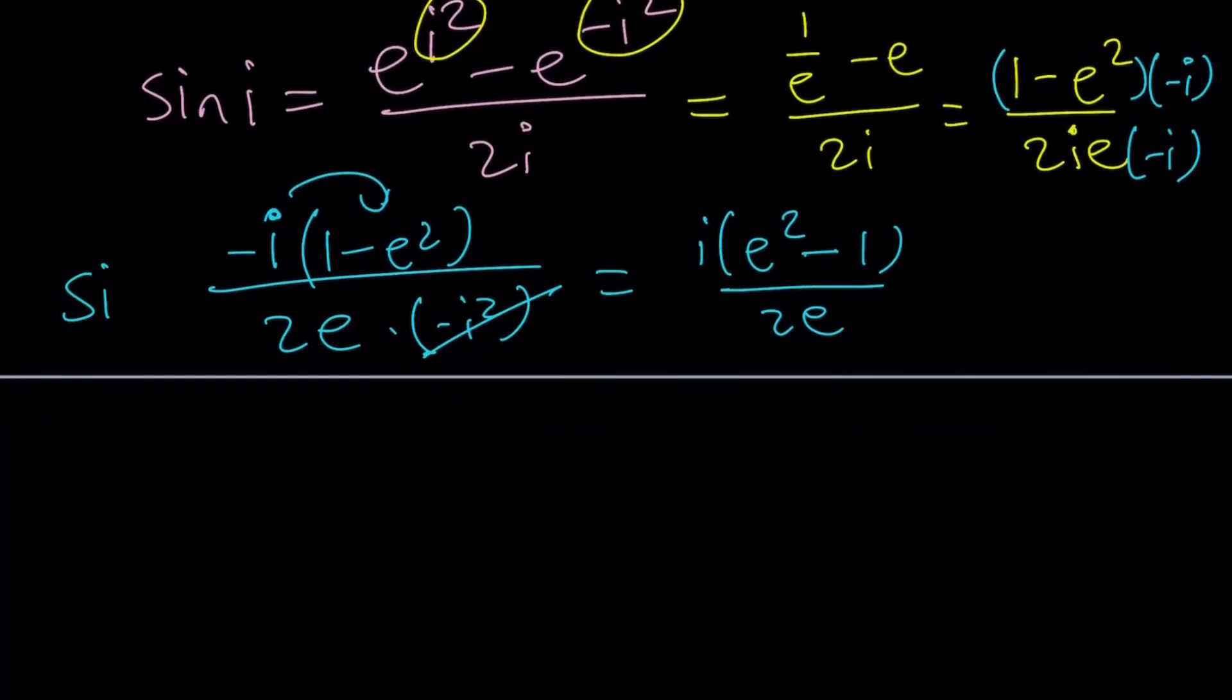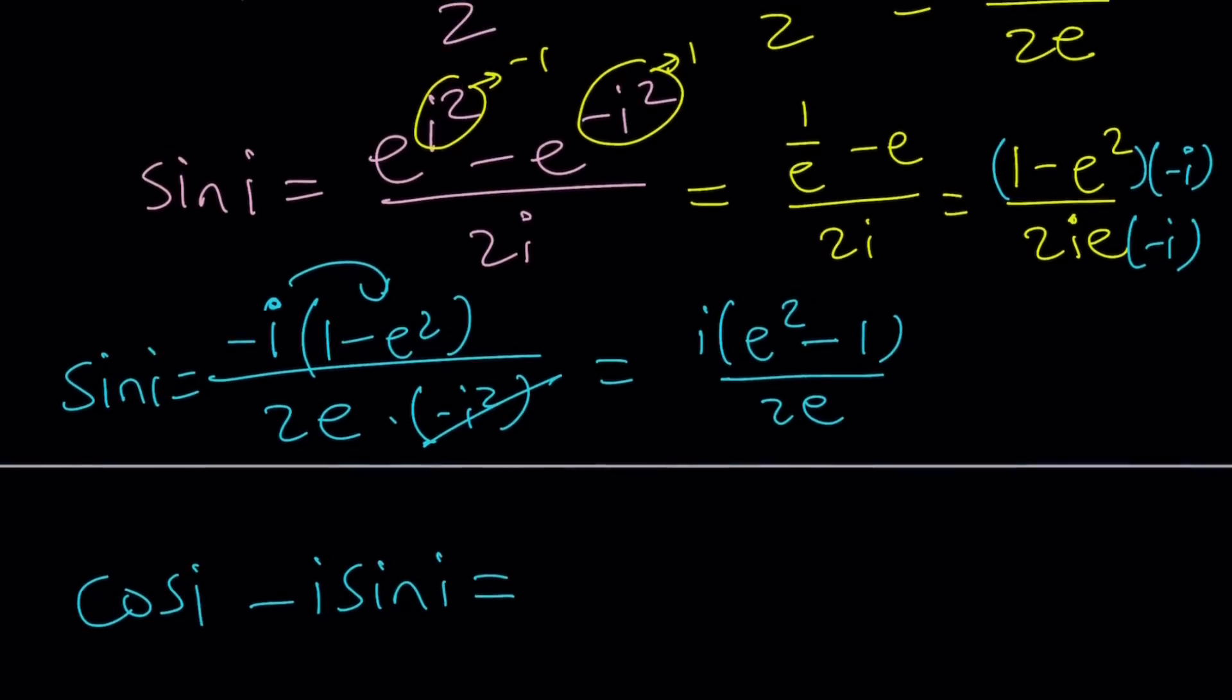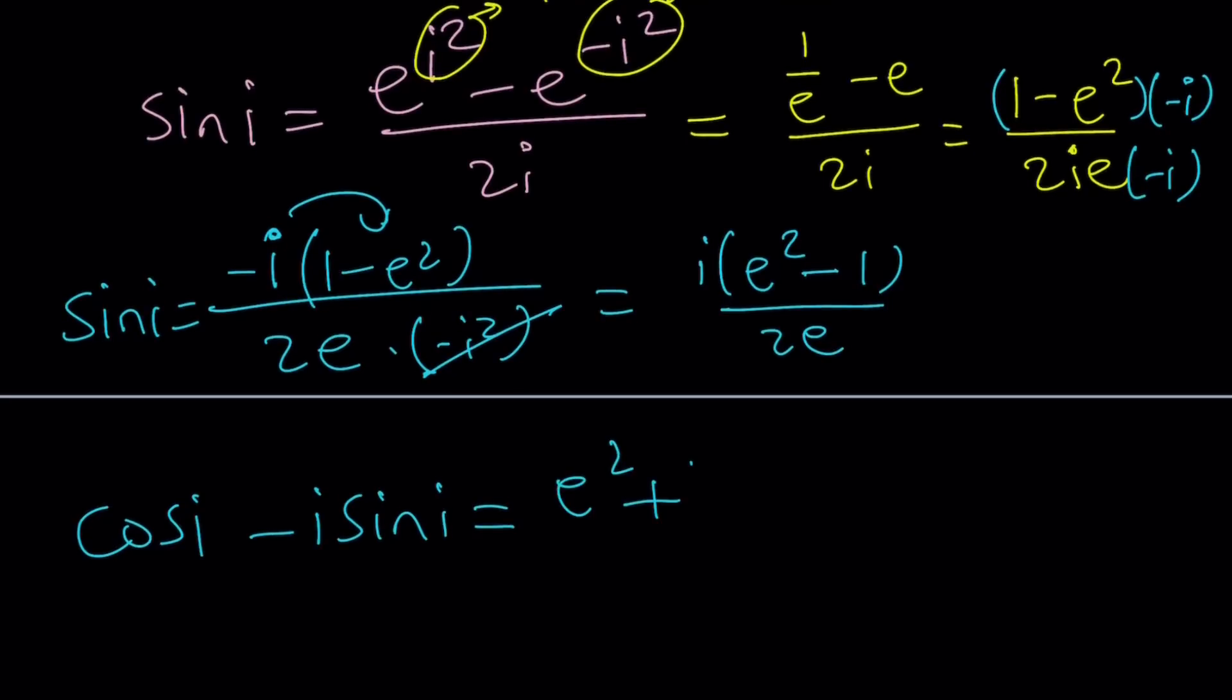Now let's go ahead and evaluate cosine i minus i sine i from here. Cosine i, we already know e squared plus 1 over 2e. And i times sine i is going to be i, another i. This. i squared is negative 1, so cancel those out and make this a plus sign. And you're good to go. Awesome.